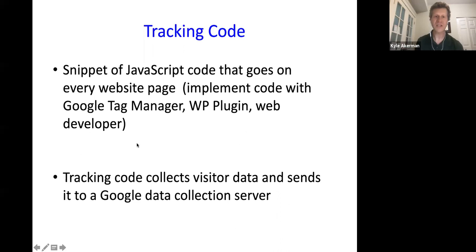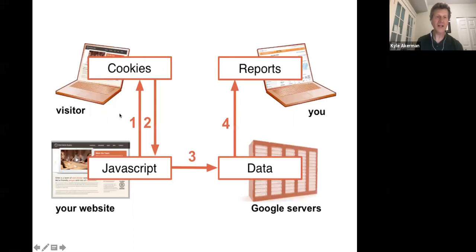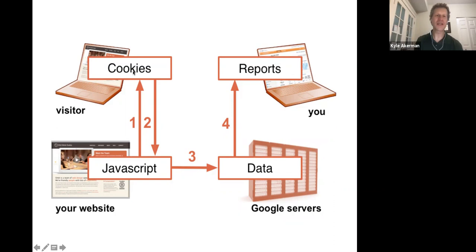When someone visits your website, they get cookied. Those cookies help identify the mobile device or computer, which talks with the JavaScript on the page. When somebody looks at your page, that information gets sent over to Google's servers, and then Google processes it and sends it to your Google Analytics interface.